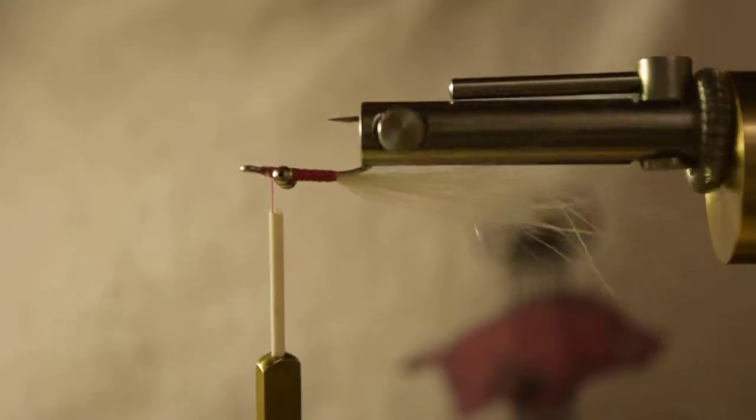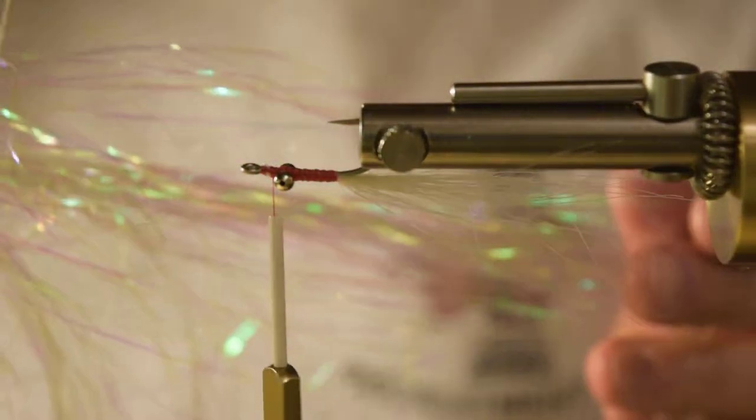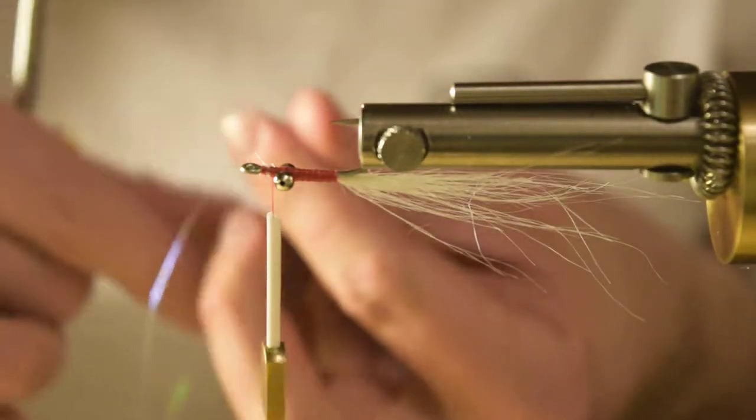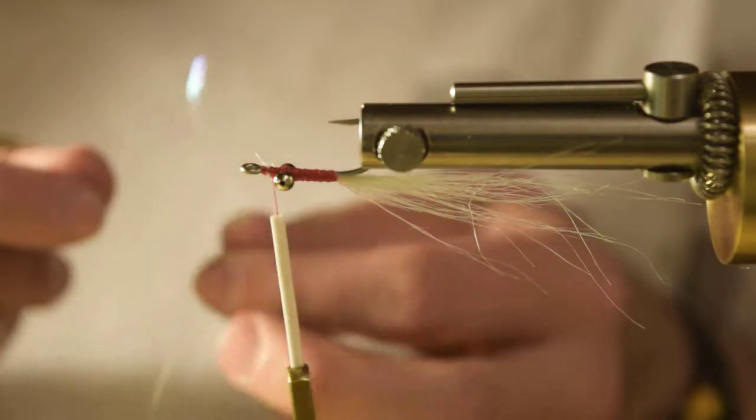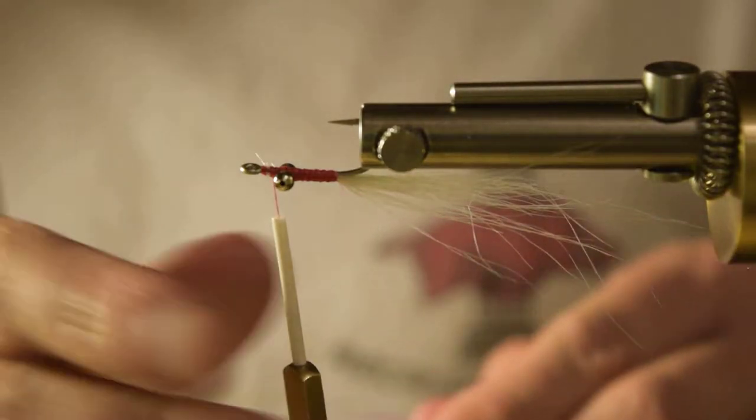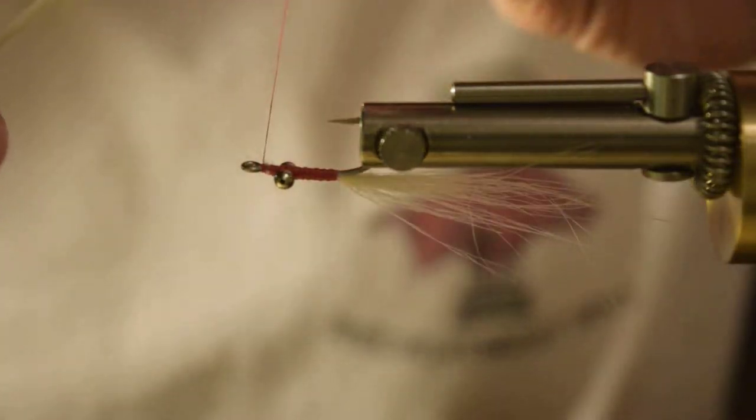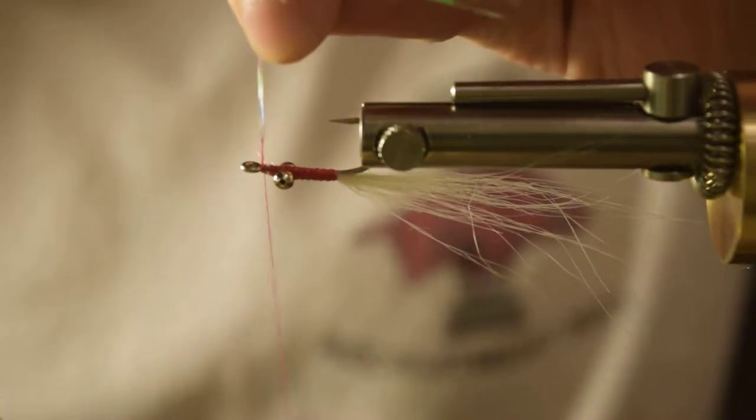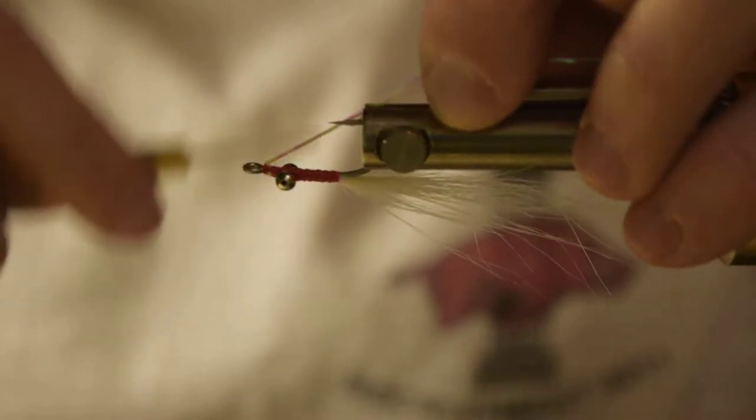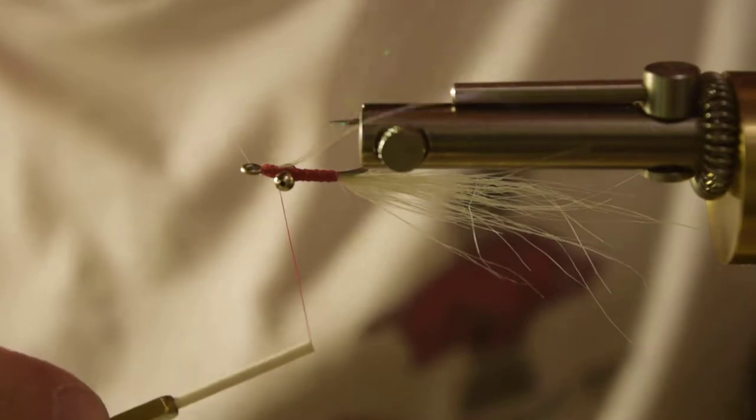We're going to invert that hook. I'm going to take some flash material. You can use whatever flash material you want. This is just some pearlescent flashaboo. I usually take about two or three fibers maybe. I don't go real heavy on the flash. So I got my three fibers here. I'm going to double them over my thread. I'm going to pull up on that material and pull down with my bobbin. And that's going to secure it on top. So now I'm just pulling that stuff back and taking wraps over it.